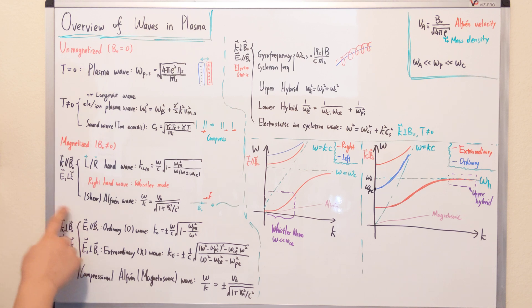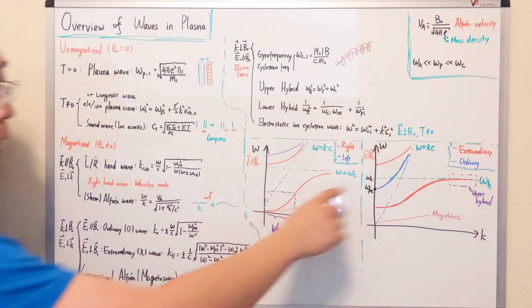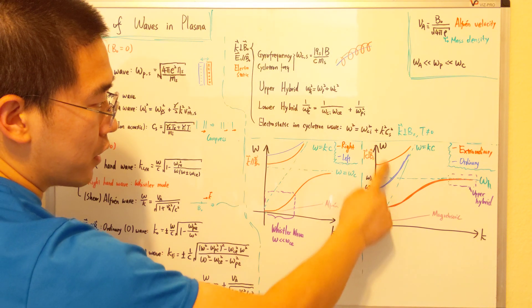And for the k perpendicular to b-naught, for this case, the k parallel to b-naught. And for k perpendicular to b-naught, we have two scenarios. E1 parallel to b-naught, E1 perpendicular to b-naught. When it's parallel, it's ordinary wave or O wave. For perpendicular, we have an extraordinary wave or X wave.